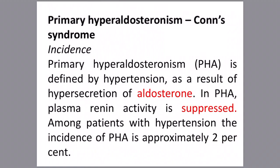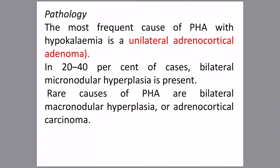Another disease of the adrenal cortex is primary hyperaldosteronism, involving adenoma or hyperfunction of the zona glomerulosa secreting aldosterone. Conn's syndrome is defined by hypertension resulting from hypersecretion of aldosterone. In primary hyperaldosteronism, plasma renin activity is suppressed as a negative feedback mechanism. Among patients with hypertension, the incidence of Conn's syndrome is approximately two percent.